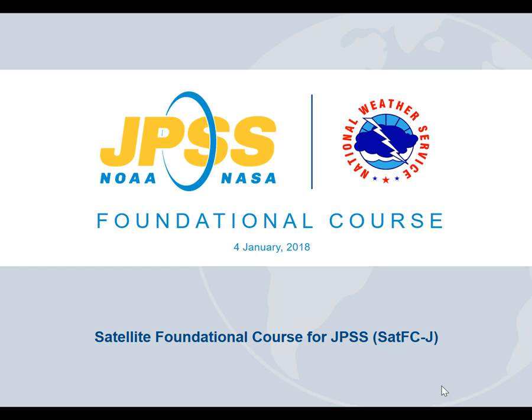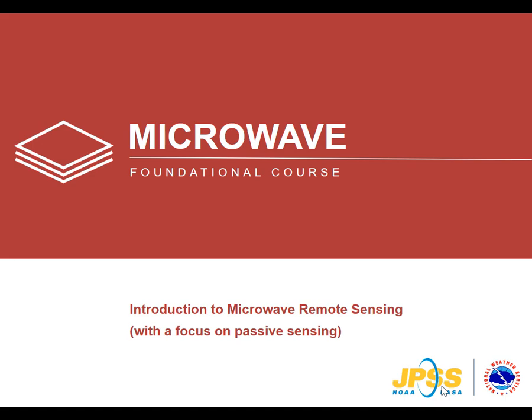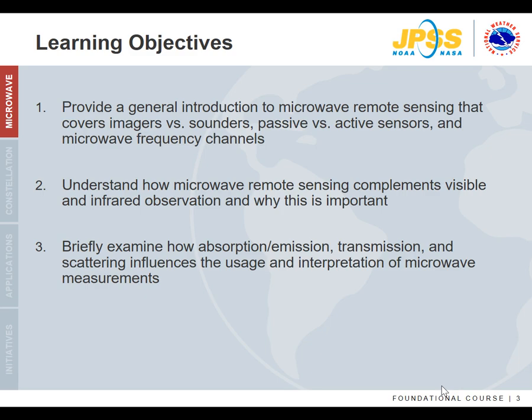This module is part of the Satellite Foundation course for JPSS and is a general introduction to microwave remote sensing with a focus on passive sensing. This will help put into perspective how microwave remote sensing complements visible and infrared observation and why it's important. We'll look briefly at the properties that influence the interpretation of microwave measurements.